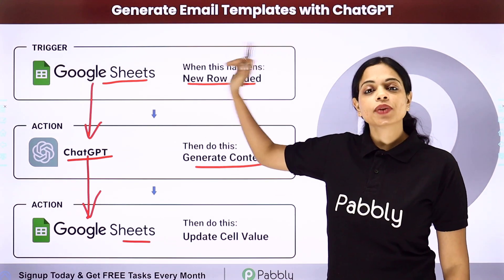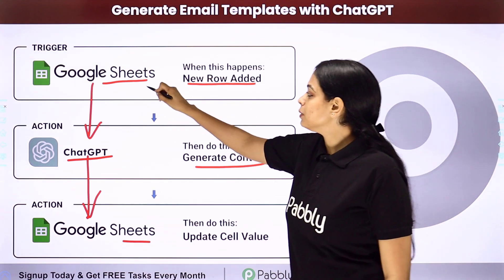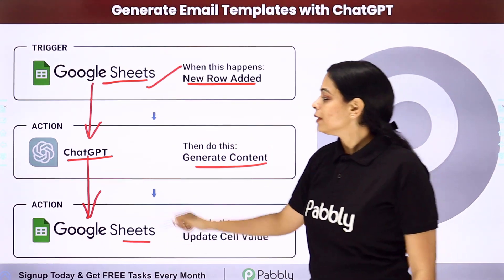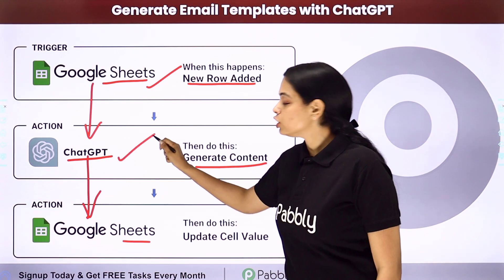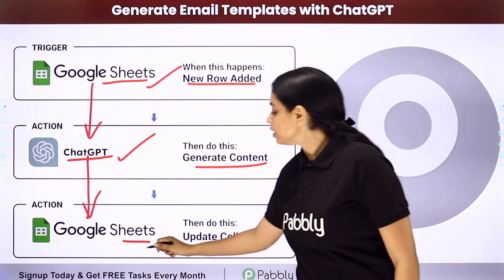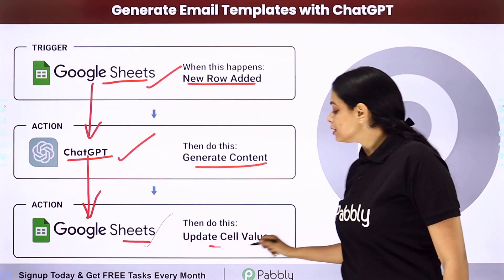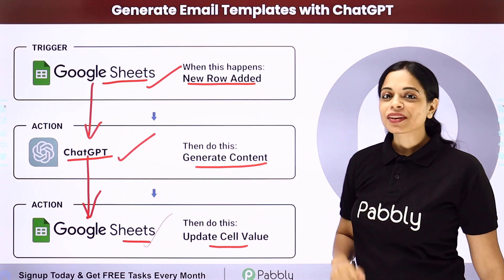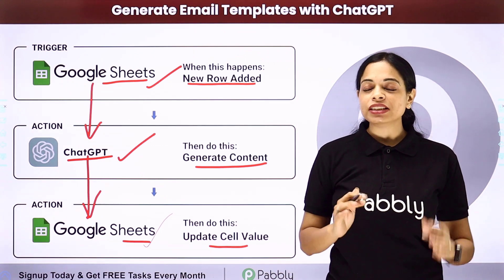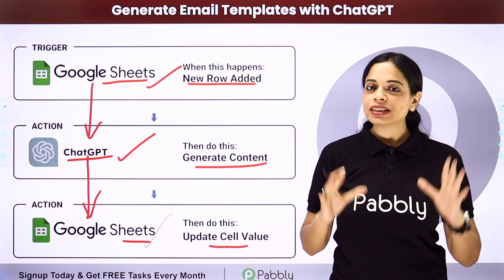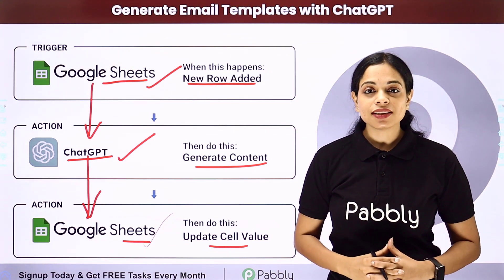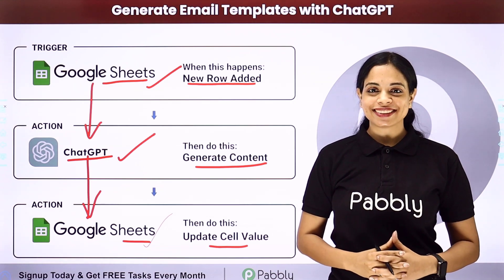Your trigger application will be Google Sheets, then your action application will be ChatGPT, and then again it will be Google Sheets to update the cell value. To understand how you can integrate and automate this entire process yourself, let me take you to my screen.